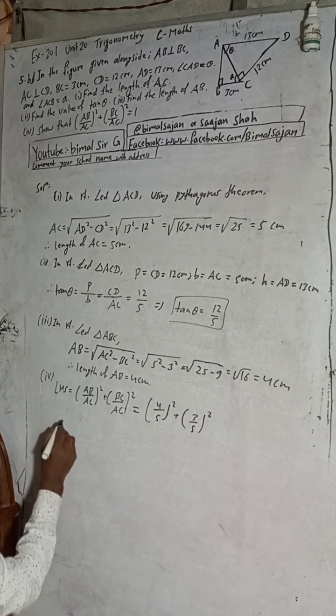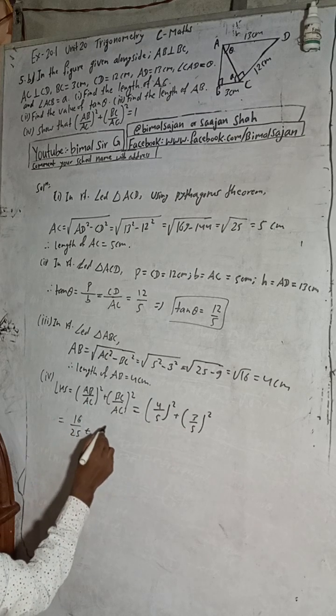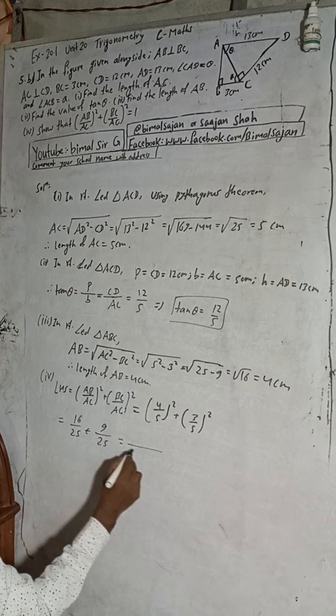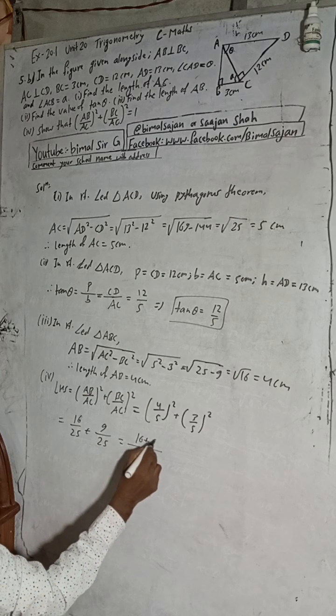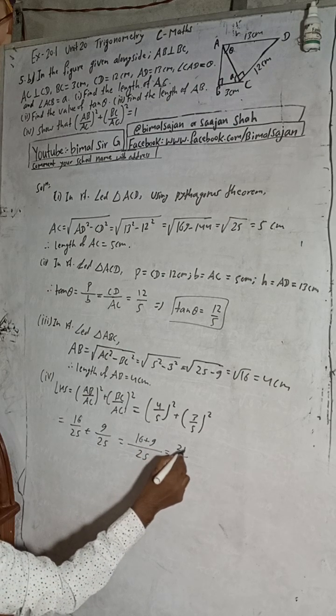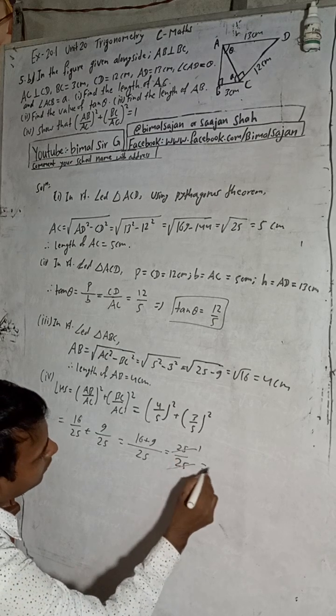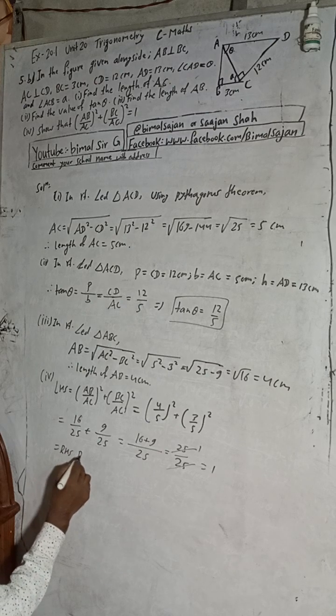This is 16 plus 9 which equals 25 by 25. This is 1, so this equals RHS. We can solve this using another method: AB by AC is sin theta and BC by AC is cos theta, so sin square theta plus cos square theta equals 1.